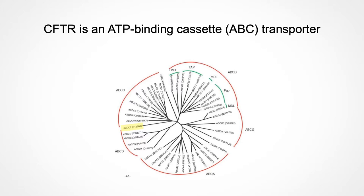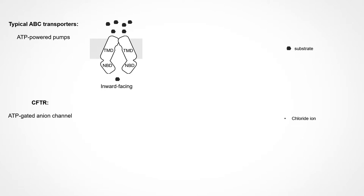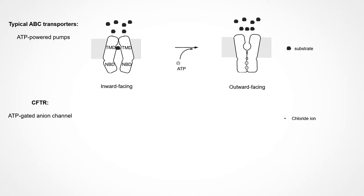Biologically, CFTR is also very interesting in that it belongs to the family of ATP-binding cassette transporters, ABC transporters, but it is the only known ion channel in this family. Typical ABC transporters, shown in the top panel here, utilize the energy from ATP-binding and hydrolysis to pump the substrate against its concentration gradient. They have two transmembrane domains, TMDs, which line the translocation pathway across the membrane, and two nucleotide binding domains, which are separated or closed in response to ATP, such that they can alternately change their conformation to pump the substrate against their concentration gradient.